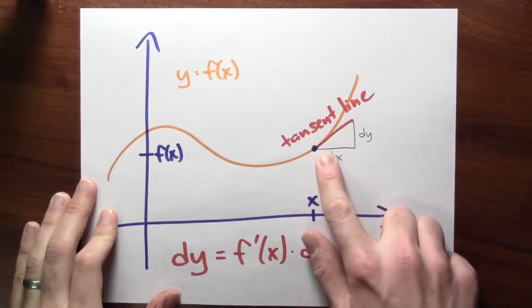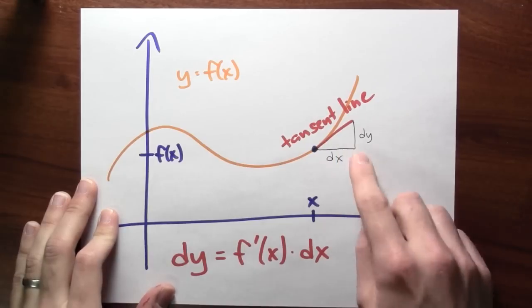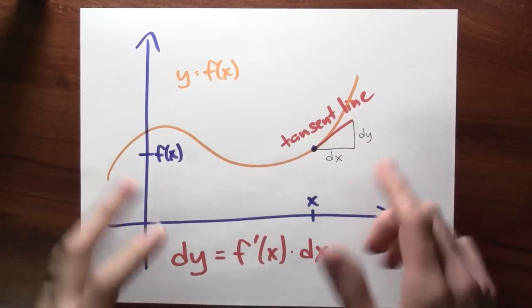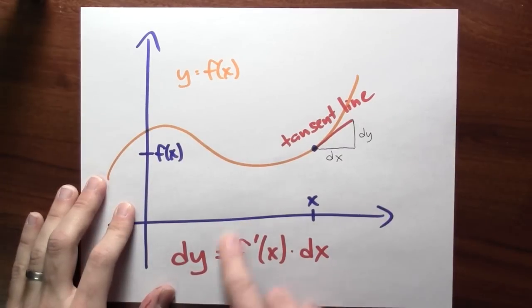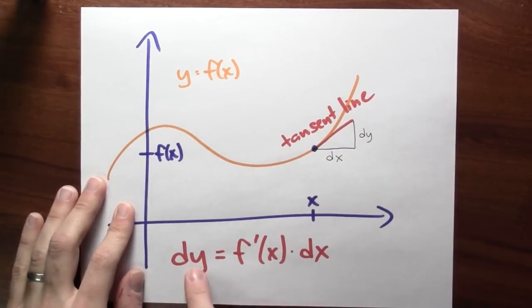And here's some change in x, which I'm calling dx. And here's some change in y, which I'm calling dy. And if you think about what is the derivative? Well, I mean, the derivative really is dy over dx, right, in some sense.